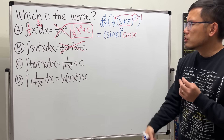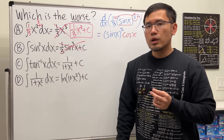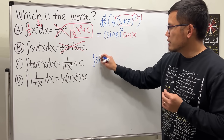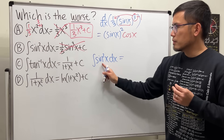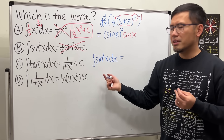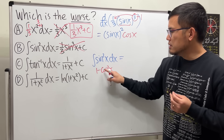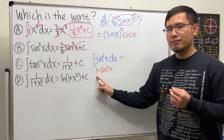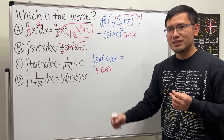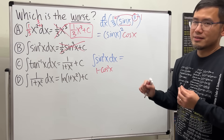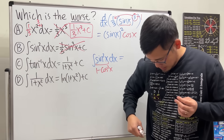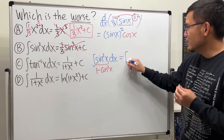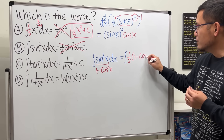So how do we actually integrate sin²x? We need to reduce the power using an identity. You might think to use 1 − cos²x, but if you replace it, you can integrate 1 but you're stuck integrating negative cos²x — same problem. We have another identity: sin²x equals one half times (1 − cos(2x)).